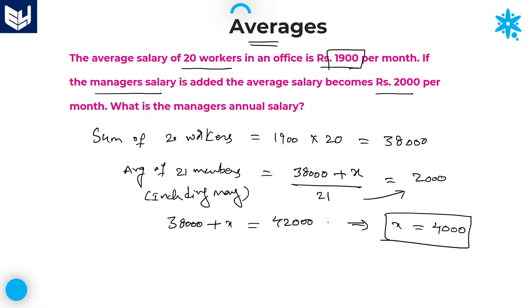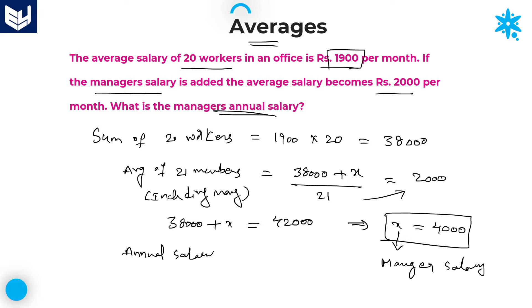X is nothing but the manager's monthly salary, which is 4,000. But the question asks for the annual salary. Annual salary = 12 × 4,000 = 48,000. So 48,000 is the annual salary of the manager. That is the required answer for this question.